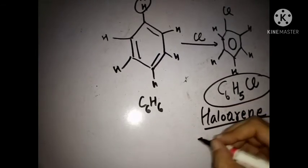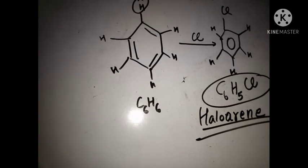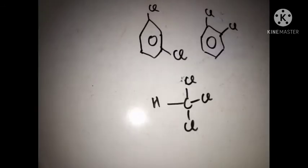C6H5Cl because now only five hydrogen is left, one is replaced with Cl, so C6H5Cl and this is haloarene.